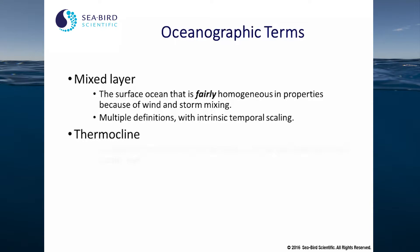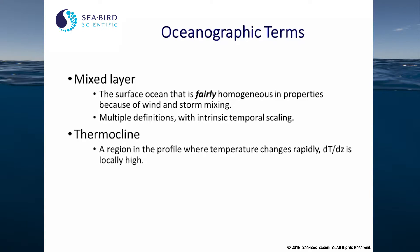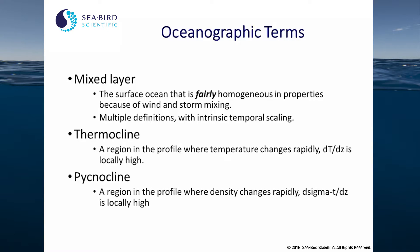The thermocline is a region in the profile where temperature changes rapidly — that is, where the change in temperature with depth is locally high. The pycnocline is a region in the profile where density changes rapidly — that is, where the change in sigma-t or another measure of density with depth is locally high.